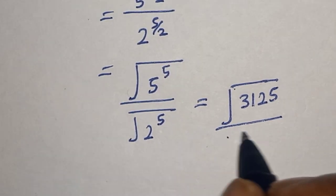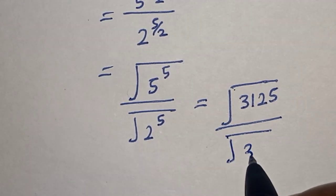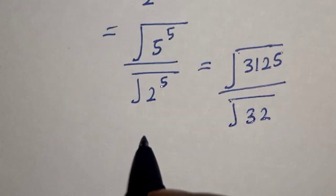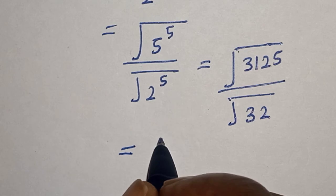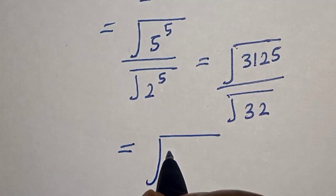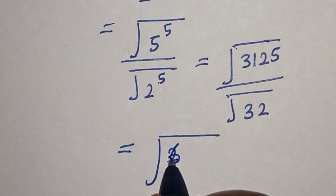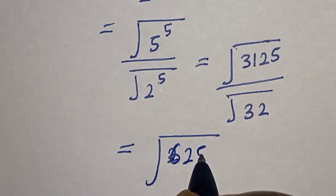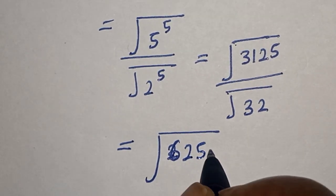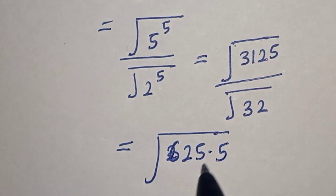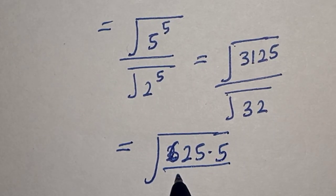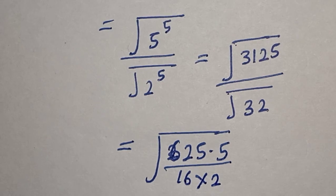This equals the square root of 625 multiplied by 5, over the square root of 16 multiplied by 2.